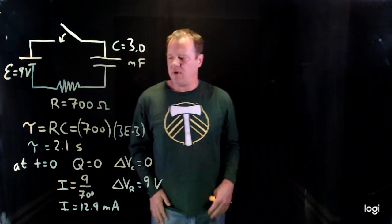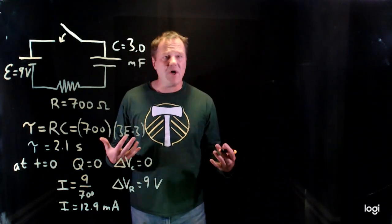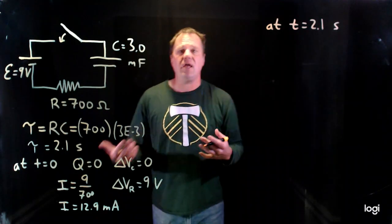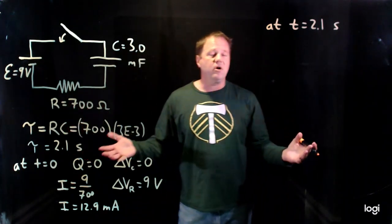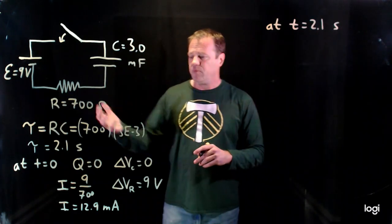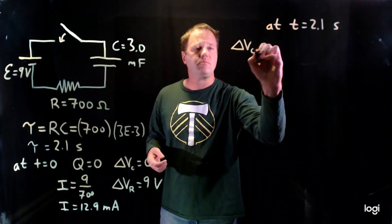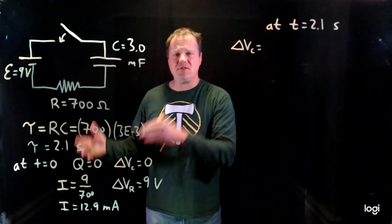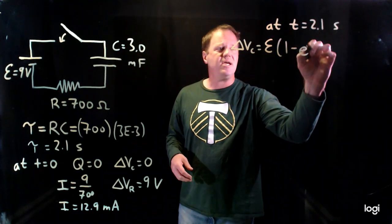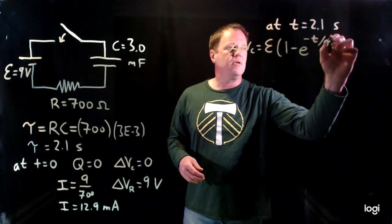Now let's calculate what happens after 2.1 seconds — we're going to wait one time constant and see what happens. At t = 2.1 seconds, we can calculate it at any time: one second, ten seconds, whatever. We can calculate it using the formulas for the charging RC circuit. I'll go ahead and calculate the voltage across the capacitor. The formula for voltage across the capacitor as a function of time is: V_C = EMF × (1 − e^(−t/τ)).